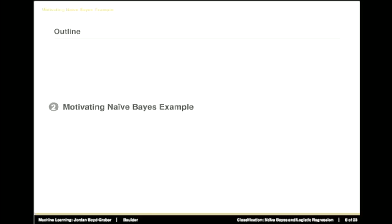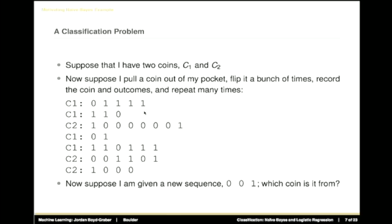Let's talk about a case where naive Bayes is totally appropriate and not making any naive assumptions at all. Say I have two coins, C1 and C2, both in my pocket. With some probability I pull out a coin, flip it a bunch of times, record the coin and the outcomes, and repeat. I've done that seven times and recorded the coin flips for each — we can think of this as training data.